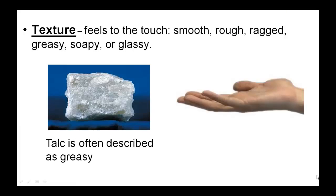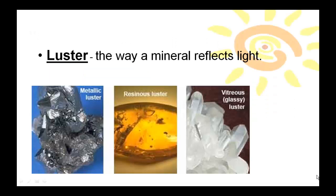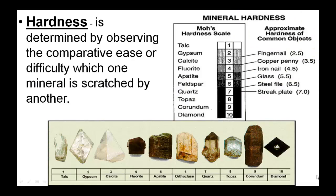Texture is how a rock feels to the touch — rocks can feel smooth, rough, ragged, greasy, soapy, or glassy. For instance, talc is often described as greasy. Luster is the way a mineral reflects light — there's a metallic luster, a resin luster, and a glassy luster. Hardness is determined by observing the comparative ease or difficulty with which one mineral is scratched by another. The Mohs hardness scale is often used. Often you don't have reference rocks in the field, so you use common objects: fingernail, copper penny, iron nail, glass, steel file, and steel plate. If an object scratches the rock, you know the rock has less hardness than that object.